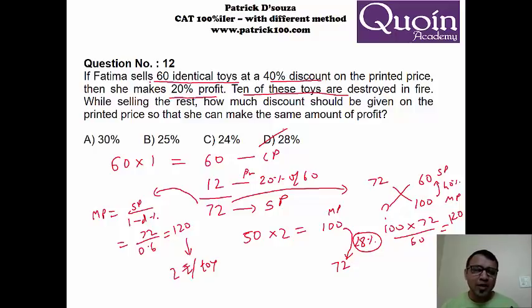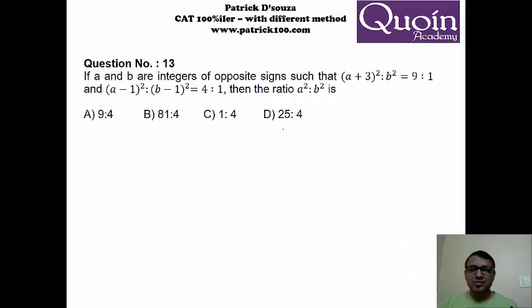Now, my 10 toys are broken. So 50 toys I have. 50 toys, the mark price is 100. This is the mark price. But I want to sell it at 72 to make the same profit. So my discount becomes 28%, which is the option. Not difficult. If you put an equation it takes a little longer time, just substituting values becomes faster. This sum is a little more tricky because you have to understand it slightly better.